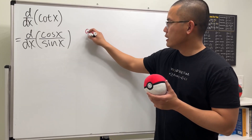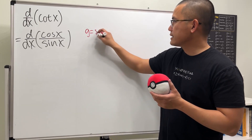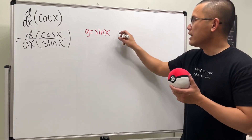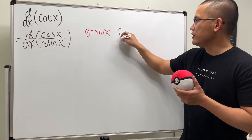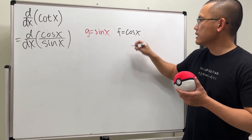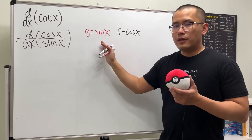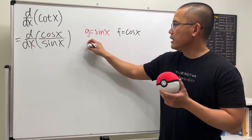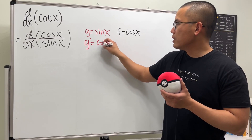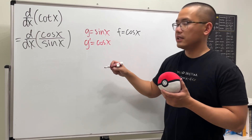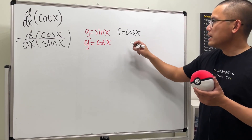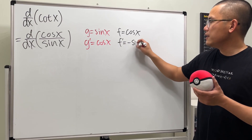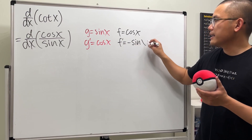The bottom function is sine x, and then the top function is cosine x — so I'll denote that by f. So we have cosine x. The derivative of sine x is positive cosine x. And then the derivative of cosine x, well, this right here will give us negative sine x.